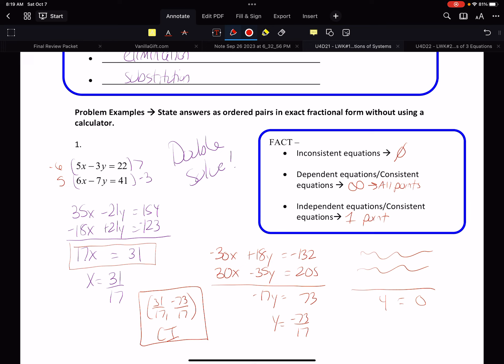So my advice is this. When you lose the variables, if the left does not equal the right, like we have right now, that is an inconsistent answer. There's no solution. If we ended up with something like 4 equals 4, where the left equals the right, that means it's the same line and it's a consistent dependent solution.